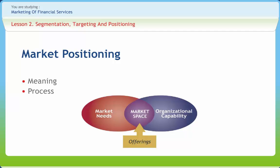Marketers decide upon a competitive position which enables them to distinguish their own products from competitors' offerings. Generally, the product positioning process involves: defining the market in which the product or brand will compete; identifying the attributes that define the product space; collecting information from a sample of customers about their perceptions of each product on relevant attributes; determining each product's share of mind; determining each product's current location in the product space; determining the target market's preferred combination of attributes; and examining the fit between the position of your product and the position of the ideal vector.